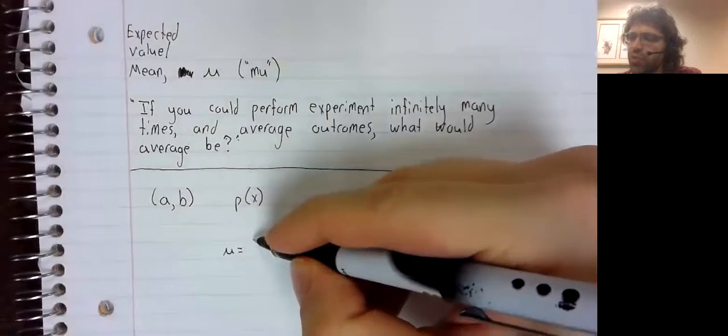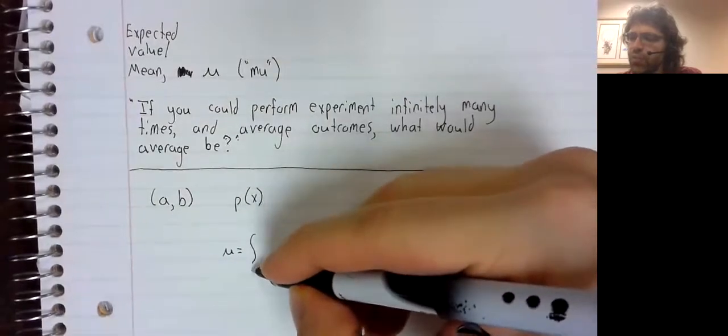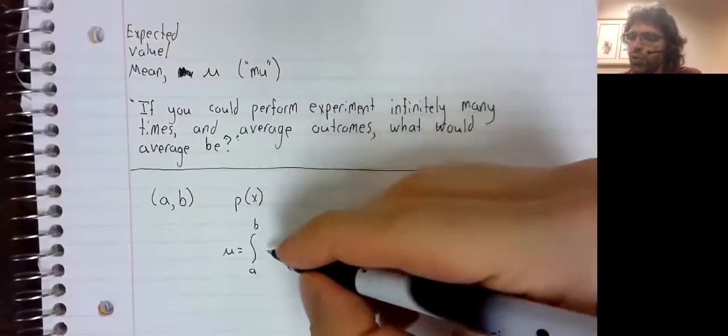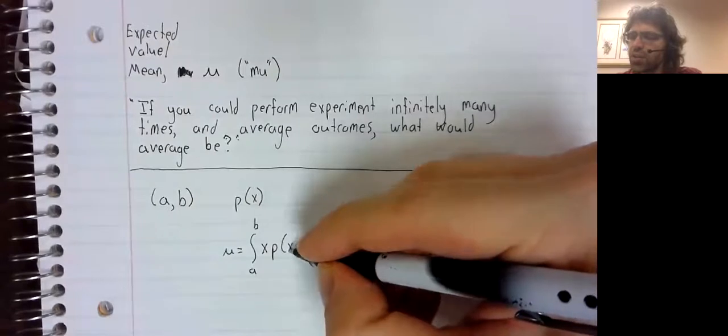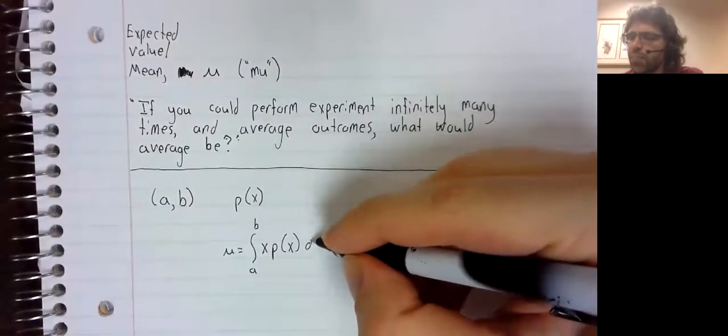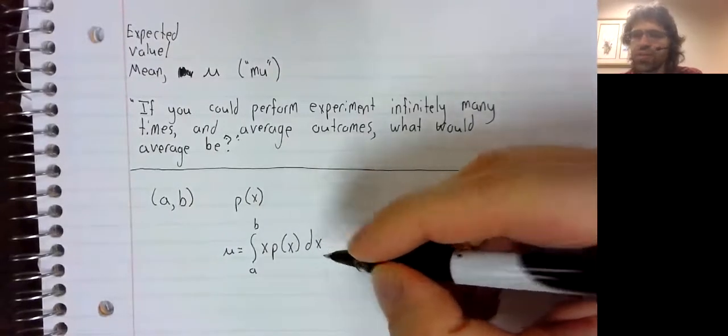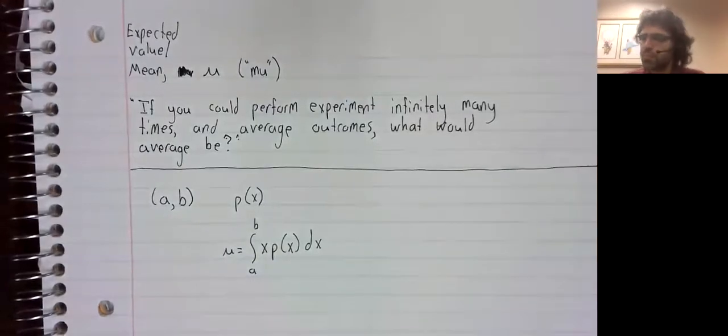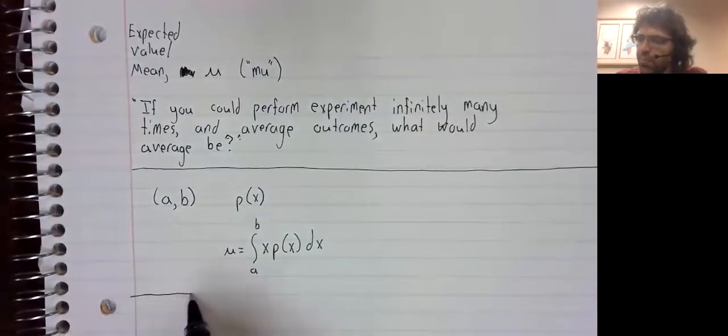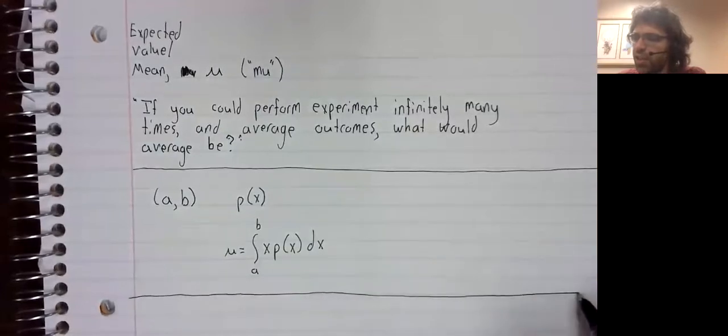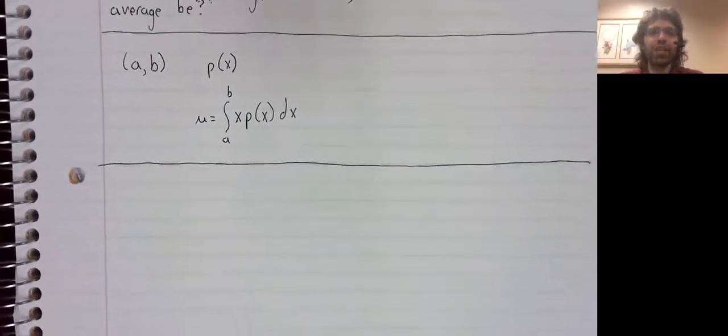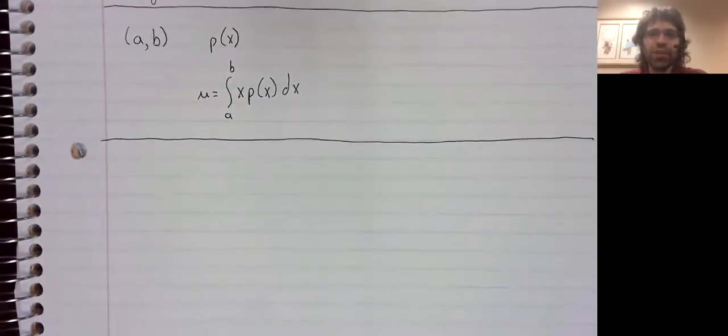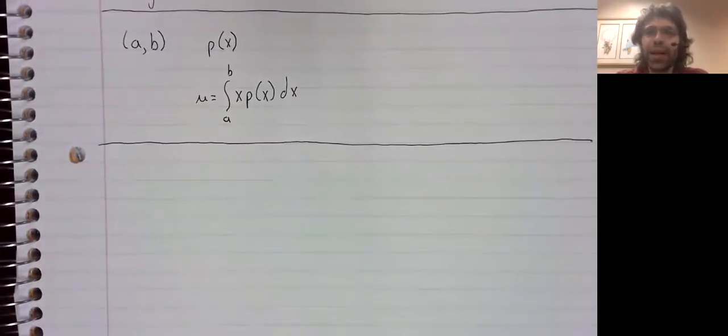And the expected value is defined to be the integral of x times p of x. If we just gave the definition, this would be a pretty brief video, which is fine, but let's do an example as well.